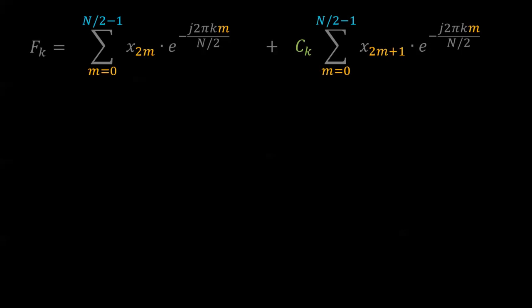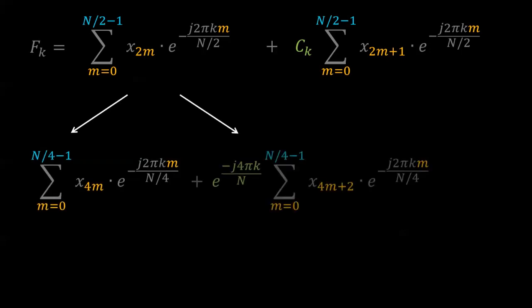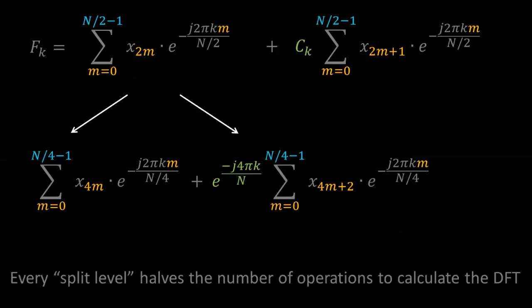We can repeat this process and divide each of these even and odd index summations into their own even and odd index summations. Every time you split the summation, you are halving the number of operations to calculate the DFT.